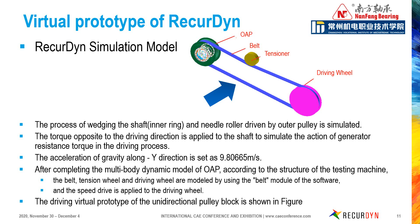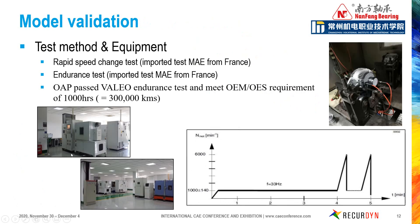On the revolute joint of the driving wheel, a speed motion is defined. In the model, gravity is set in the negative direction. Before simulation, model validation is necessary. Rapid speed change tests and endurance tests are carried out. Test equipment was imported from the field. The validation stand needs one thousand hours, and the picture shows the loading curve in the durability test.